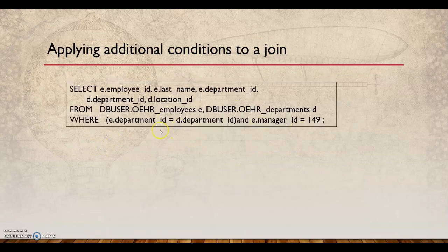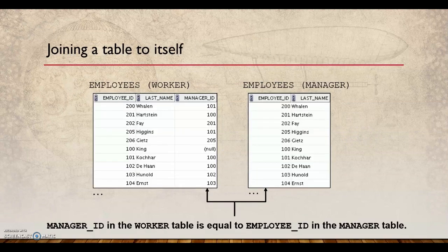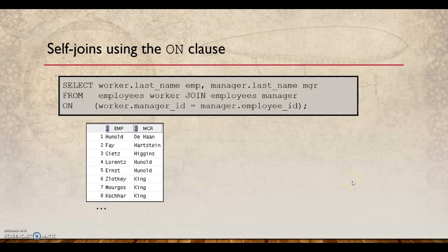There is also a self-join. Suppose in the employee table you have a manager ID — you want to find out the employees along with their manager's name. The manager ID in one row matches the employee ID of the manager's row. So you join the employee table with itself to retrieve that information — instead of just having the manager ID, you get the manager name itself.